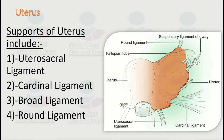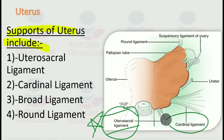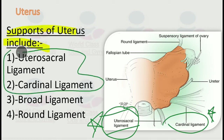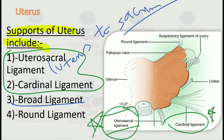Understanding the supporting ligaments of the uterus is very important. We have the uterosacral ligament, which is the strongest and main ligament of the uterus. The cardinal ligament is also very important — these two ligaments provide the main strength to the uterus. The uterosacral ligament runs from the uterus to the sacrum at S1–S3. The cardinal ligaments are on the lateral sides, and we have the broad ligaments bilaterally, which provide some support as well.